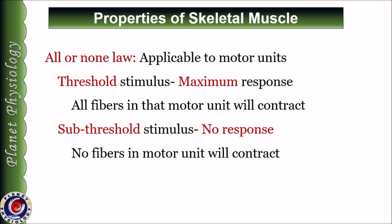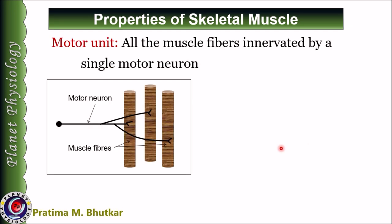Coming to the next property: all or none law. In case of skeletal muscle, all or none law is obeyed by motor units — it is applicable to motor units. This means when the threshold stimulus is applied, all the muscle fibers in that particular motor unit will contract to their maximum. Let us understand what a motor unit is. All the muscle fibers innervated by a single motor neuron constitute a motor unit. This is a motor neuron innervating three muscle fibers — this entire structure constitutes a motor unit.